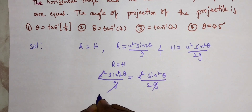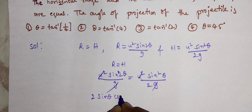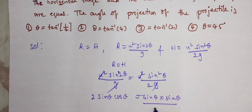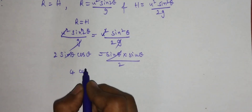So sin 2 theta I am writing as 2 sin theta cos theta — that is the sin 2 theta formula. On the right side, sin squared theta is sin theta into sin theta. The divided-by-2 and one sin theta will get cancelled on both sides. By cross multiplying the equation, we can get 4 cos theta is equal to sin theta.